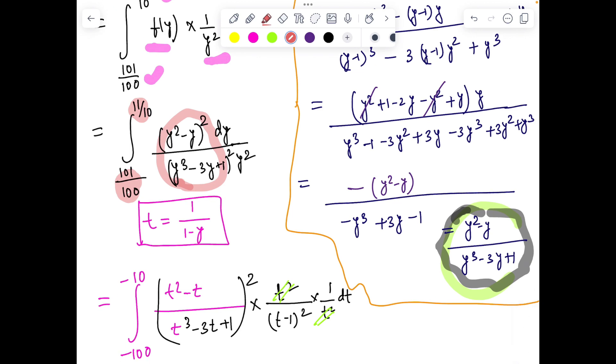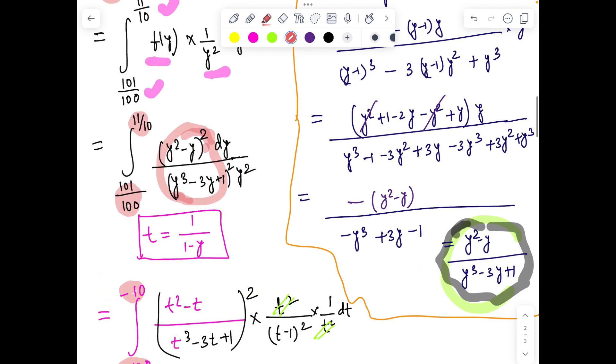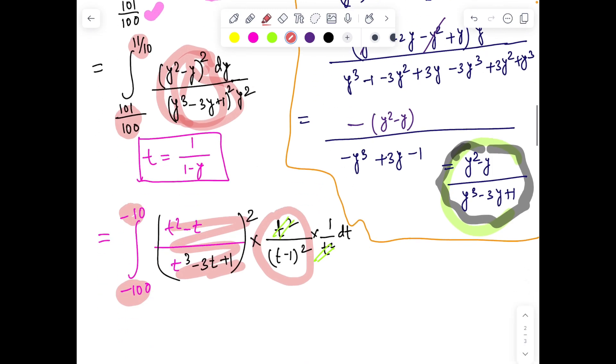Now if I make the same substitution, t = 1/(1-y), then I(1/100, 11/10) converts to I(-100, -10). This quantity still has the same structure, and y² becomes ((t-1)/t)². dy becomes dt/t², so finally we can clearly see the relationship.